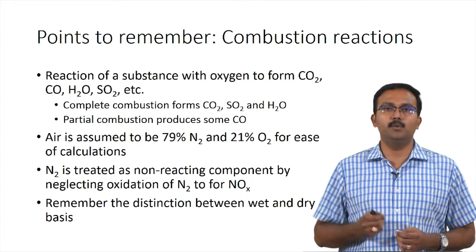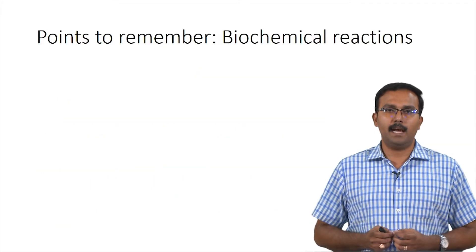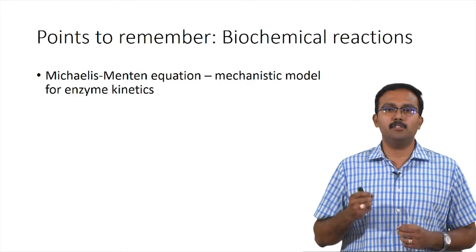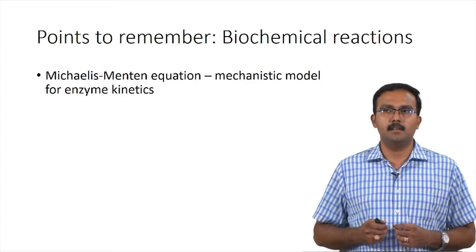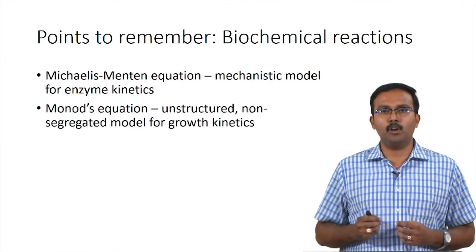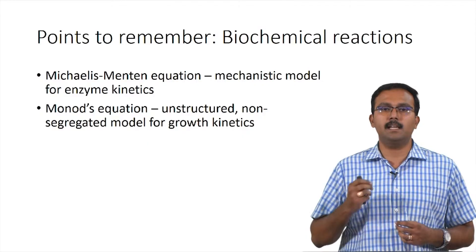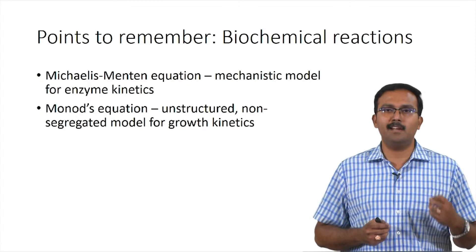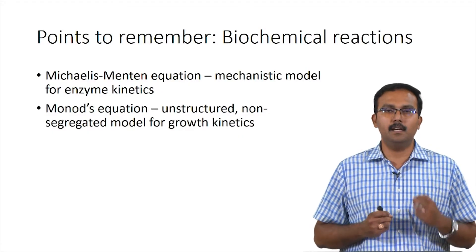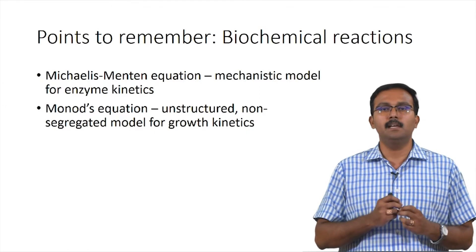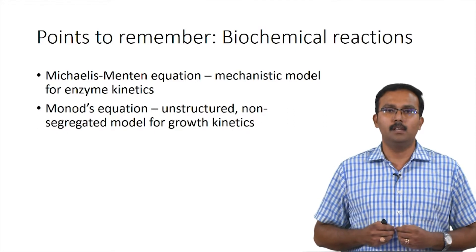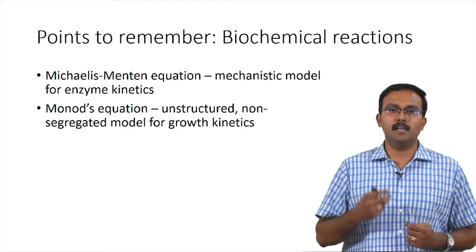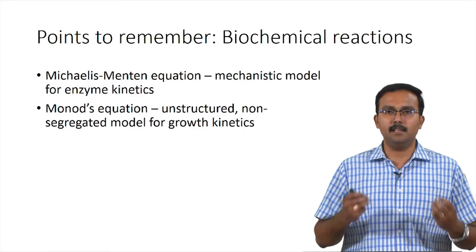When we come to biochemical reactions, the Michaelis-Menten equation is a mechanistic model describing enzyme kinetics. Monod's equation is the unstructured non-segregated model for growth kinetics. The Michaelis-Menten equation can be derived from the enzyme reaction mechanism, making it a mechanistic model. Monod's equation cannot be derived — it is an empirical model based on unstructured non-segregated modeling which makes certain assumptions.